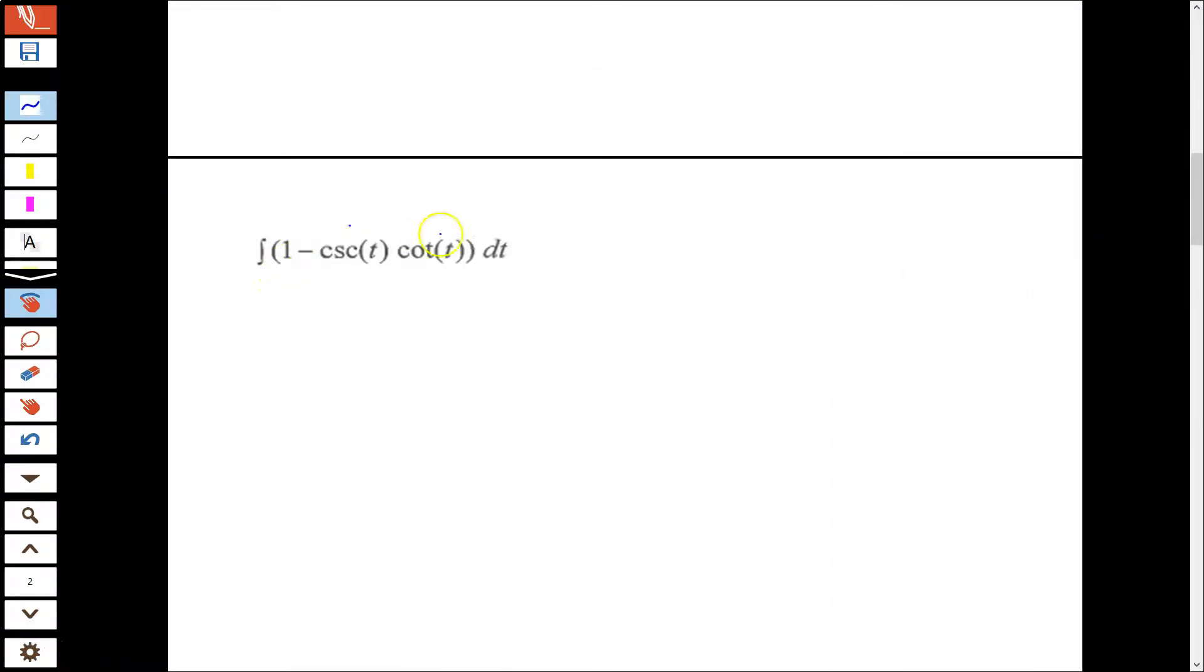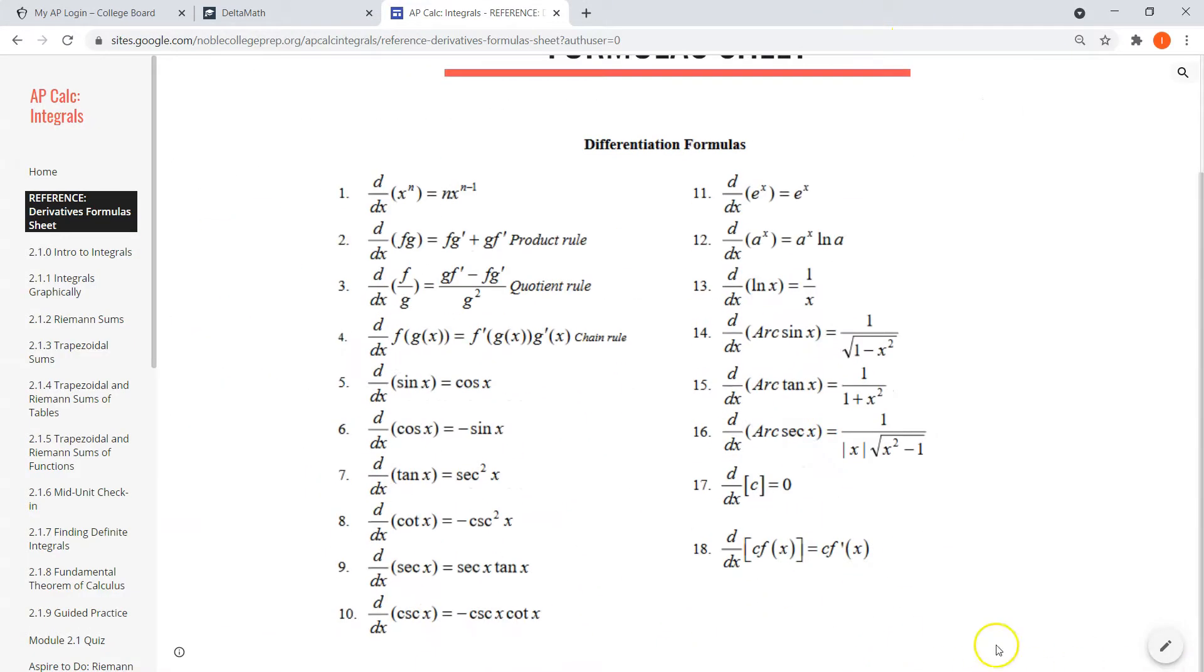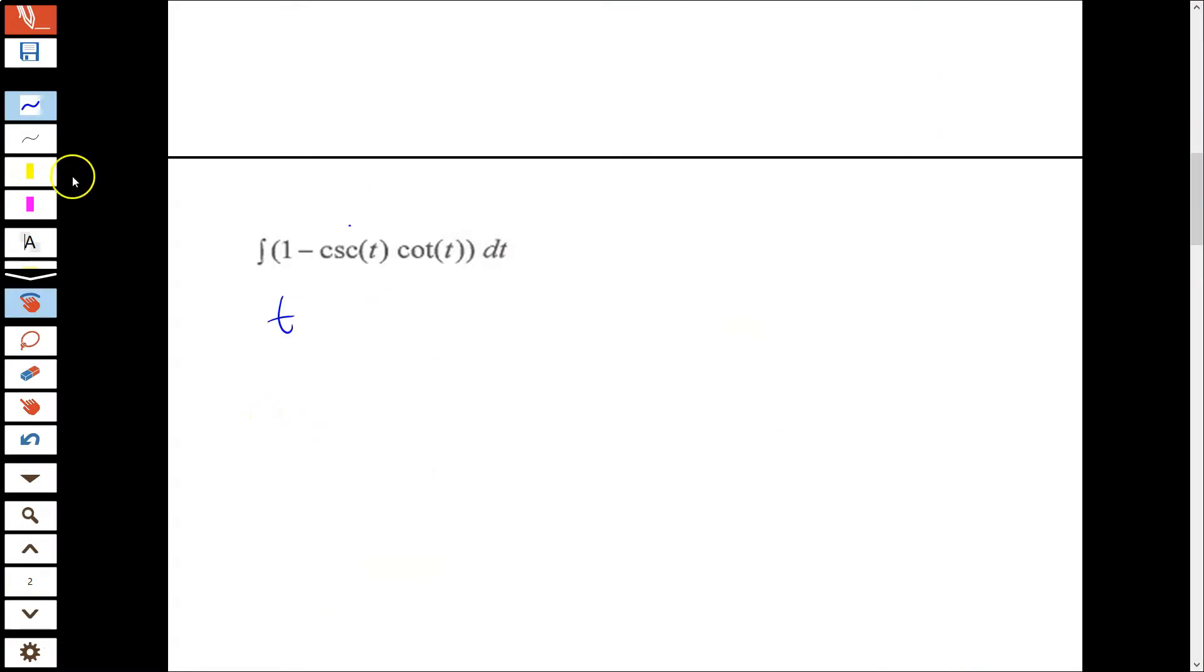So the integral of 1 with respect to t is just t. And then remember, my derivative was negative. So in other words, when I look at my list, my negative sign is part of that derivative's formula. So the anti-derivative is just plain cosecant. So plus cosecant of t plus c. And notice I didn't write both my c's this time for my two different integrals. I just combined them right away, which is fine.